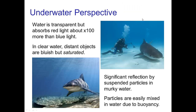It's a very different situation underwater. Water is transparent but it strongly absorbs red light, much more than blue light. So things underwater tend to have a bluish tint as well. However, instead of being desaturated, it tends to be saturated in clear water. On the other hand, if the water is somewhat murky, then we have some Mie scattering from suspended particles, or possibly reflection from them, which may cause some desaturation. It's very easy for particles to be suspended in water due to buoyancy.